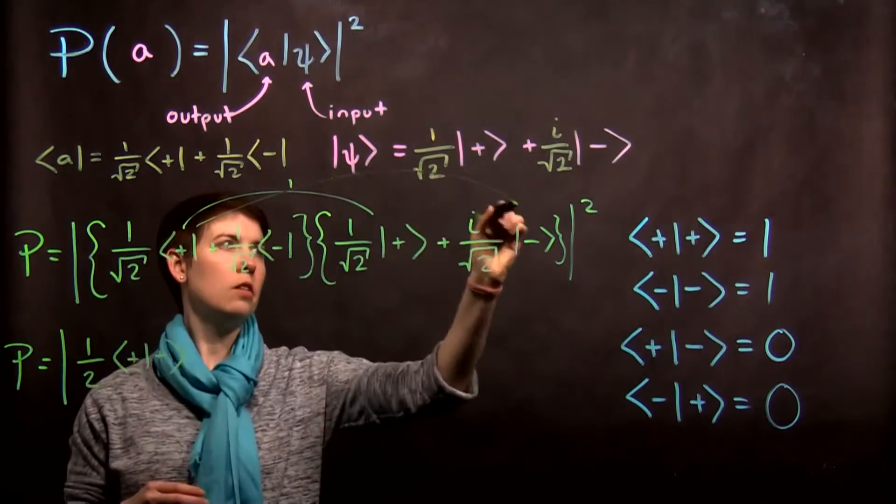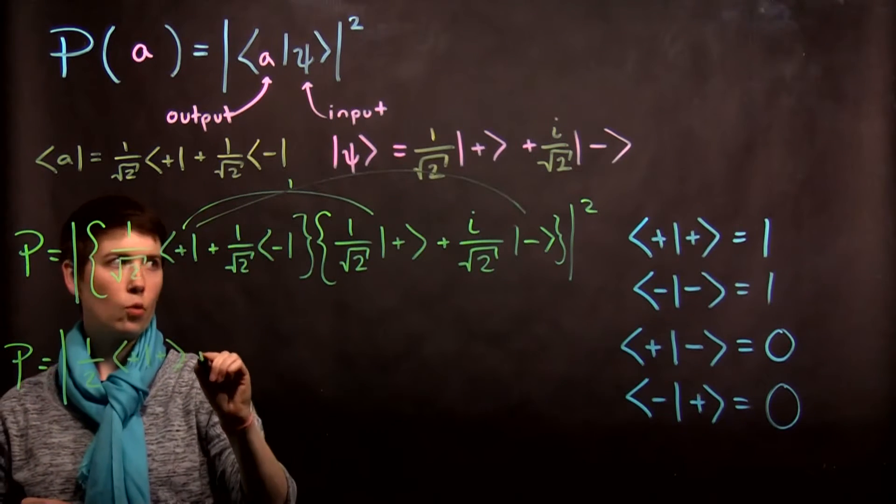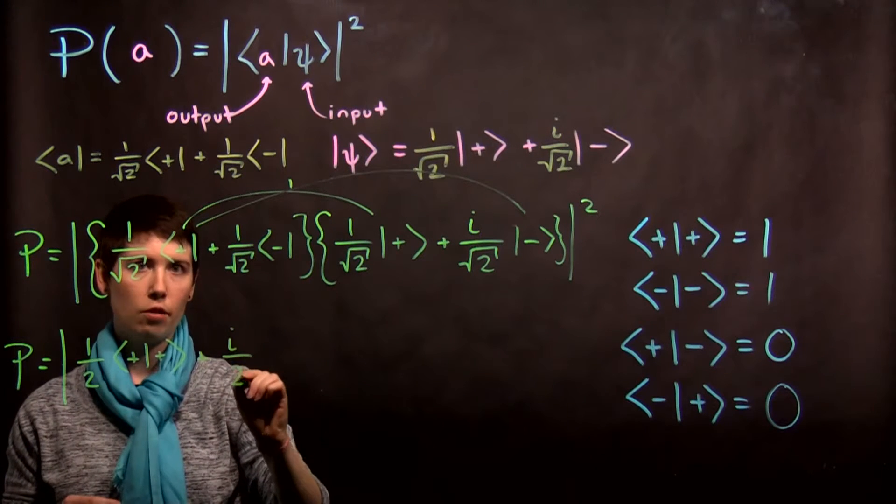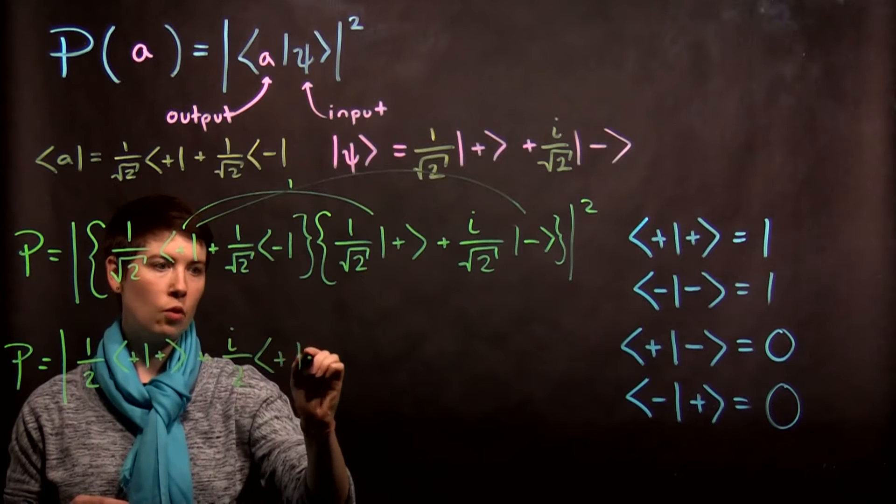And then my second one is going to be one over square root of two times i over square root of two. So that's i over two. And now I have a plus with a minus.